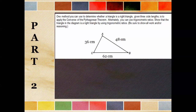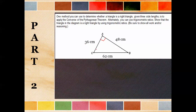This question says: one method to determine whether a triangle is a right triangle, given three side lengths, is to apply the converse of the Pythagorean theorem. So if we wanted to prove this was a right triangle, we could say 36² + 48² and find the square root. But alternately, we could use trig ratios. It wants us to show that the triangle is a right triangle by using a trig ratio, showing all work and reasoning. If 62 is the longest side, that means this will be the right angle. So we want to find the two other angles.